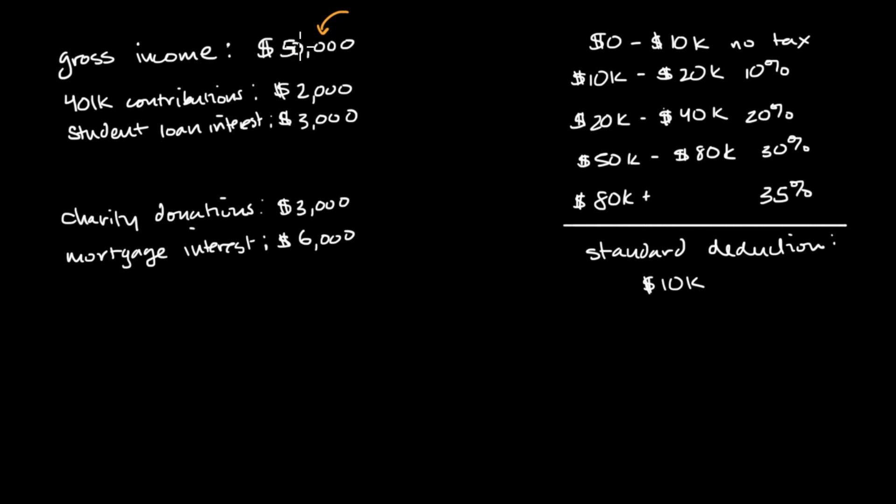This is everything from their salaries, tips they might make, if they act as a contractor, payments for that. It could be dividend income if they own stocks. It could be interest on bank accounts or CDs that they might have. And so when you add up all of that, we get to $50,000.